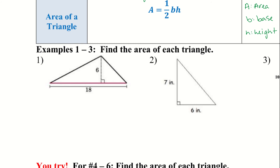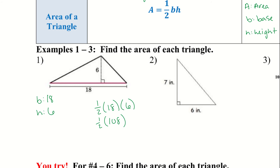Let's try a couple of examples. We want to find the area of each triangle, and what we need is the base and the height. The base is 18 and the height is 6. We plug that into our equation: one-half times the base times the height. We do 18 times 6 to get 108, then divide by 2 to get 54.